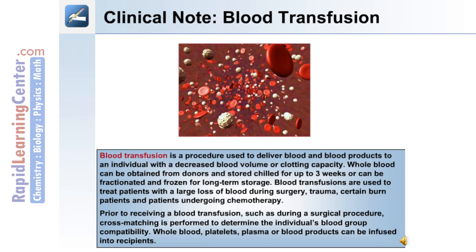Prior to receiving a blood transfusion, such as during a surgical procedure, cross-matching is performed to determine the individual's blood group compatibility. Whole blood, platelets, plasma, or blood products can be infused into recipients.